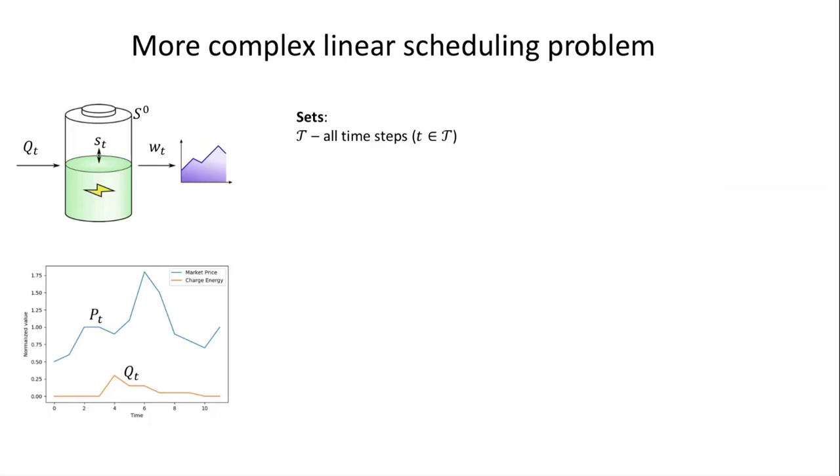Let's start by looking at the sets. First, we need to define a set of all time steps. We'll call this set T, or script T. Index t will be in the set from 1, 2, and so on, up to some time duration. In this case, we've chosen 12 time periods as our limit. That's our set for this problem.